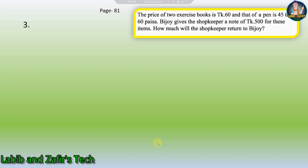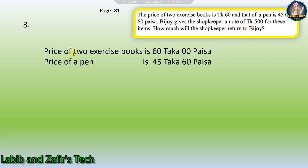Let's go to our third word problem. The price of two exercise books is Taka 60, and that of a pen is 45 Taka 60 Persha. Bijoy gives the shopkeeper a note of Taka 500 for these items. How much will the shopkeeper return to Bijoy? Let's see the answer. Price of two exercise books is 60 Taka 0 Persha, and price of a pen is 45 Taka 60 Persha.